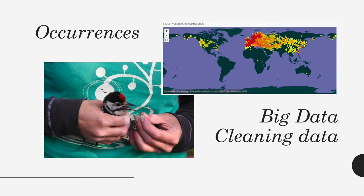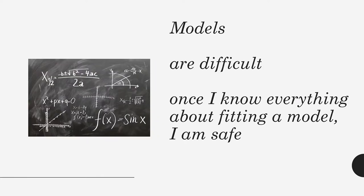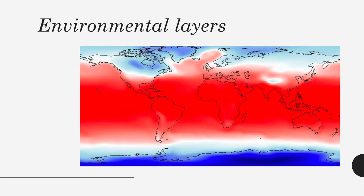For occurrences, you are going to have a whole bunch of sessions about species occurrences — the problem is working with a lot of species, a lot of points, and we need to clean large databases that will have errors in space and errors in taxonomy. For the models, most of you think they are difficult, and once you understand the models everything is okay — but this is not entirely true, because you also need to think about environmental layers, and we are going to have six lessons to explain this.